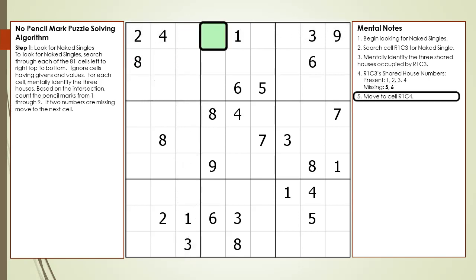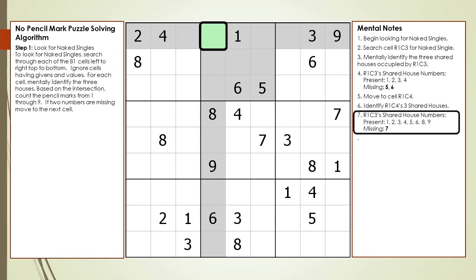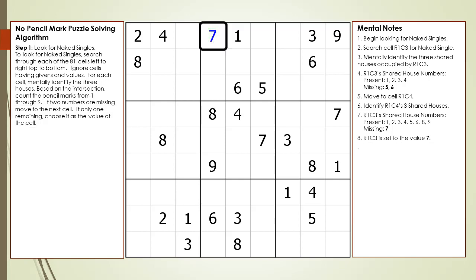We are now looking at cell 1,4. We identify the three shared houses, now highlighted in gray. We count the numbers 1 through 9 and find only the 7 is missing. If there are two or more possible numbers missing in the shared houses, we move on to the next cell. However, if there is only one remaining possible number, we have found a naked single. We choose 7 as the value of cell 1,4 and update our puzzle solving algorithm to include choosing the naked single value when found.